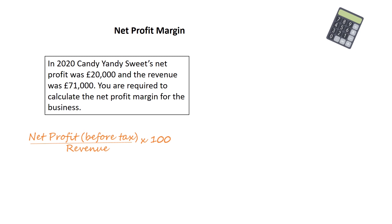We're required to calculate the net profit margin for Kandy Yandy Sweets. In 2020 their net profit was £20,000 and the revenue was £71,000. Pause the video if you'd like to try. So we divide £20,000 by £71,000, times by 100 — the answer is 28.16%. Did you get it right?